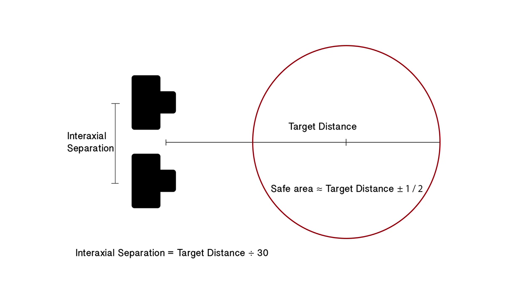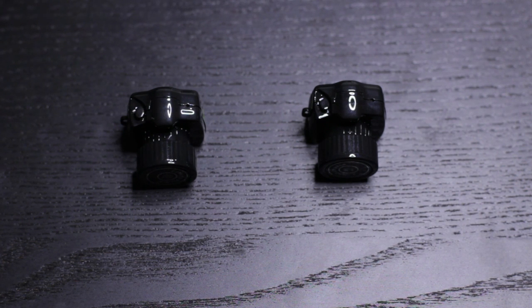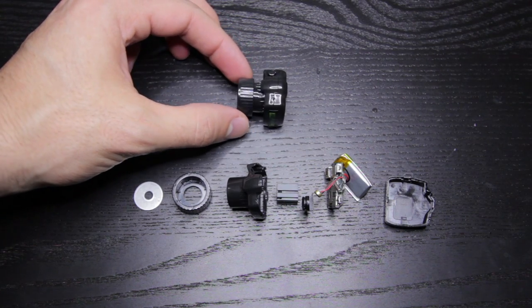Now the interaxial separation is important to remember. In human eyes that distance is about two and a half inches, similar to the distance between these two cameras here, but I am hoping to get these two cameras even closer together.